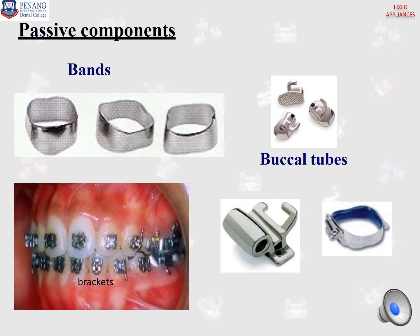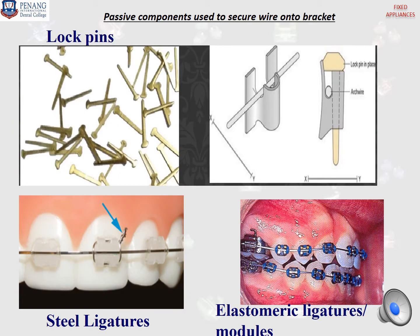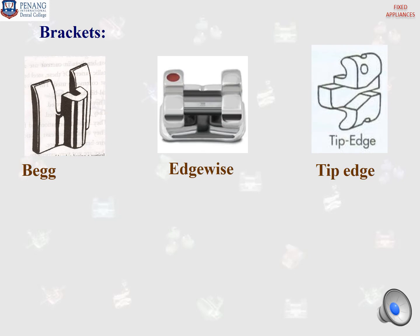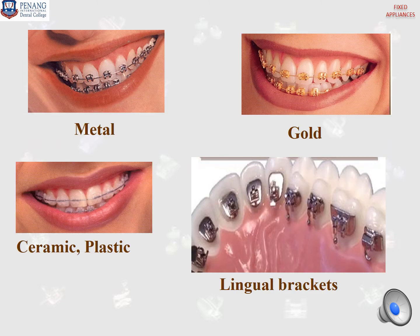The passive components are bands, buccal tubes, and brackets. Examples of passive components used to secure wires onto brackets include lockpins, steel ligatures, and elastomeric ligatures, sometimes called modules. There are types of brackets according to the system: Begg brackets, edgewise brackets, and deep edgewise brackets. Brackets are also classified by the material used: metal brackets, gold brackets, ceramic or plastic brackets, and lingual brackets, which are metal brackets placed at the lingual surface of the teeth.